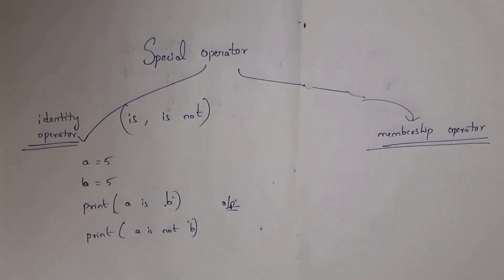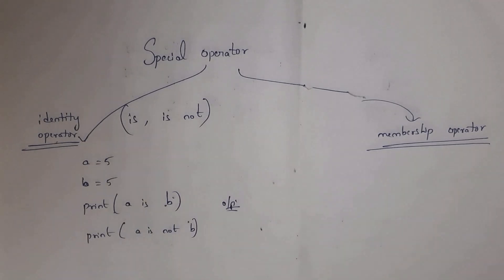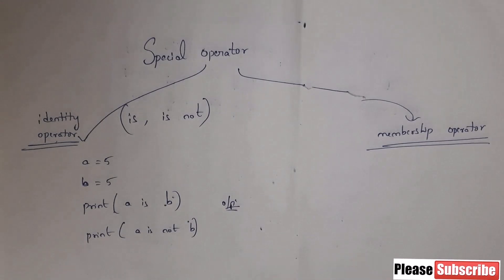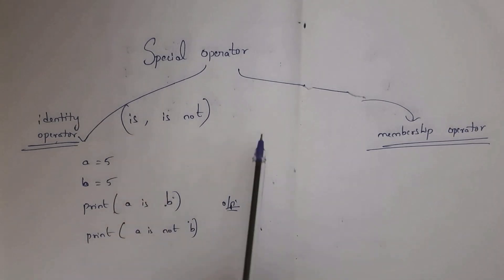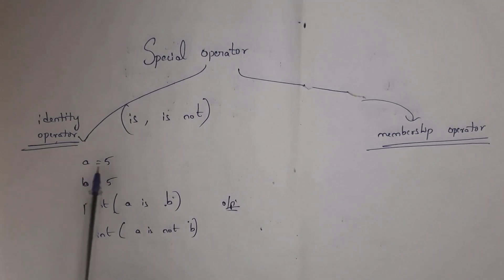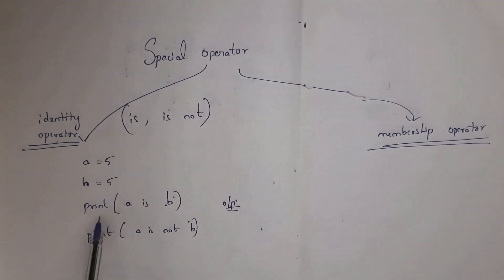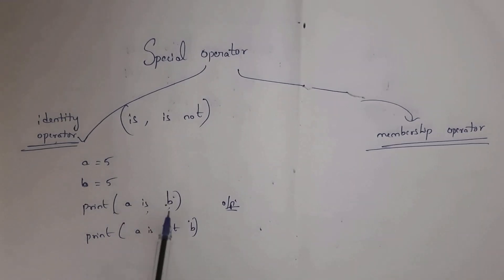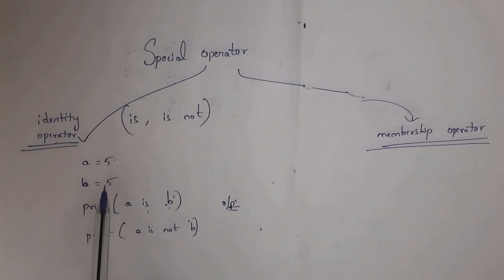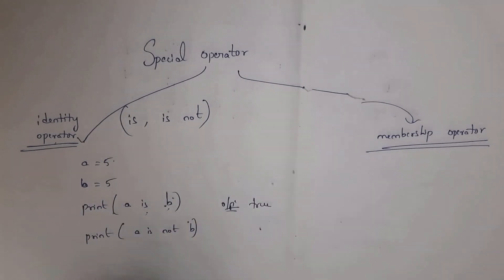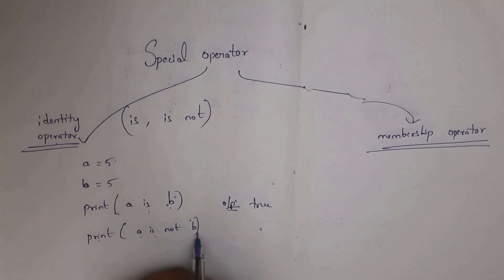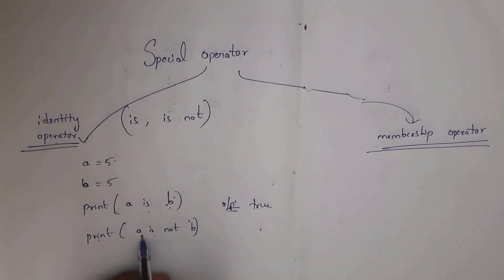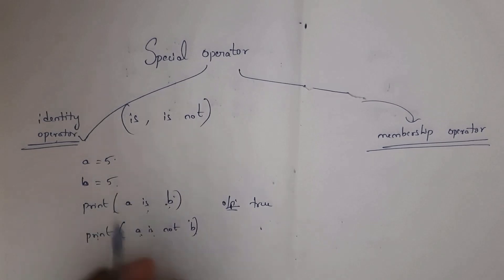There are two special operators in Python: identity operator and membership operator. The identity operator contains 'is' and 'is not'. With a = 5 and b = 5: a is b checks whether a equals b — both are 5, so result is True. a is not b checks whether they are not equal — both are equal, so result is False.